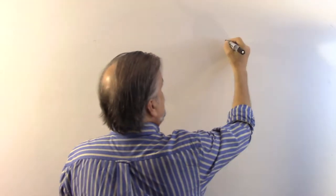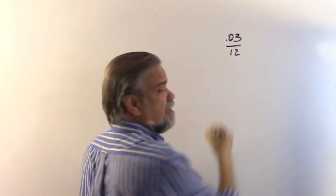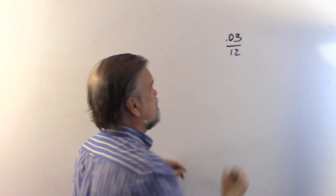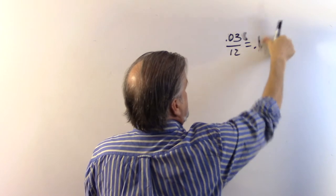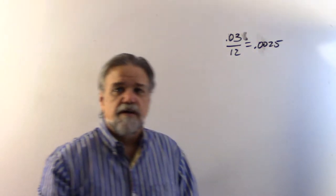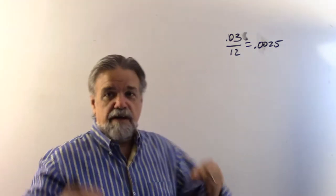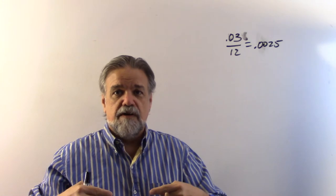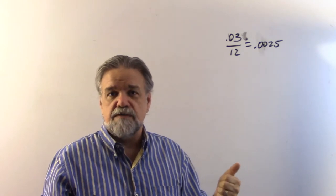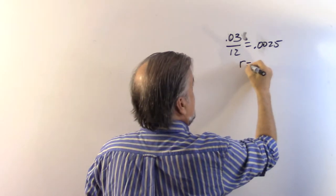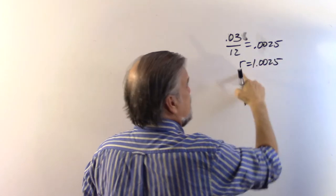I'll explain as we go along. So first off, how much interest is she getting? It says 3% interest, but compounded monthly. So 3% over 12 months is 0.25%, which is 0.0025. What that means is going month to month, in order to pay 0.25% interest, we're going to be multiplying by 1.0025.